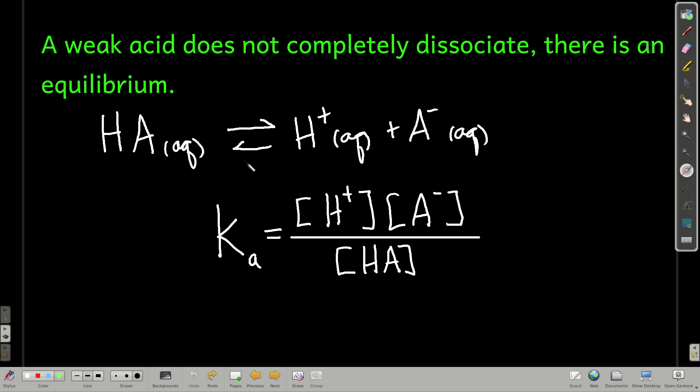As opposed to a strong acid, a weak acid does not completely dissociate when dissolved in water, and that means there is an equilibrium that occurs. So for our generic acid, it's in equilibrium with the proton and its conjugate base. The equilibrium constant expression for that, just like we saw in the equilibrium chapter, looks like this. This is just called something slightly different. It's called Ka instead of K, but really, it's just an equilibrium constant.